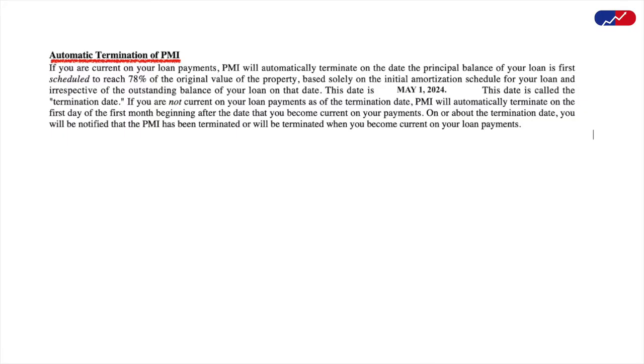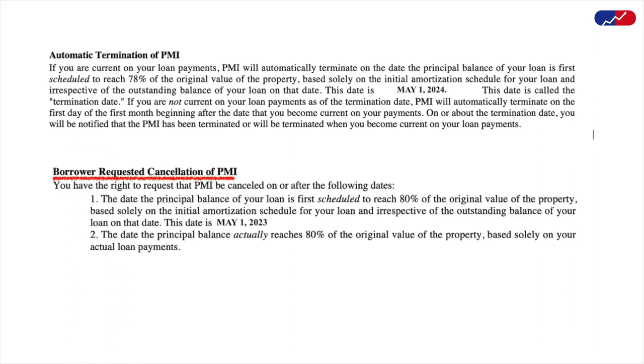So what exactly does this PMI tip mean to you? Let us discuss this with John's example. We know that when John starts his loan, his LTV is at 84.94%. As he continues his payments, according to the automatic termination clause on the PMI disclosure, his PMI will be automatically terminated on May 1, 2024, which is the date his LTV will reach 78%. However, there is also a borrower-requested cancellation clause wherein John can call his lender the day after May 1, 2023 — the date his LTV will reach 80% — and have the PMI payments terminated by manually requesting it.